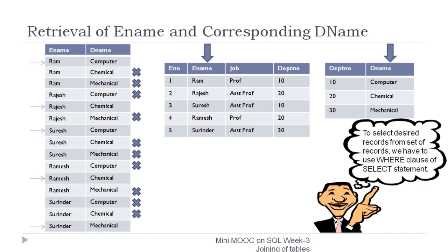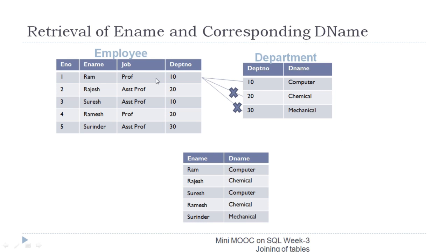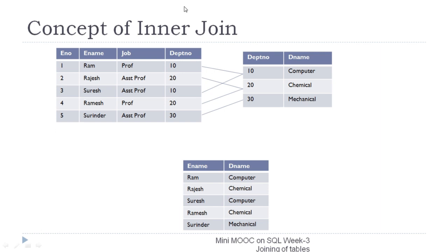To select the desired records from the set of records, we use the WHERE clause of the SELECT statement. As discussed with the Cartesian product, the first employee record belonging to department number 10 makes three pairs with department numbers 10, 20, and 30. We are only interested in the pair where the department numbers match and need to discard the other two. So it is natural to enforce the condition that only those pairs be selected where the department number of the employee table equals the department number of the department table.